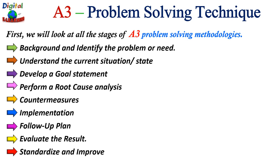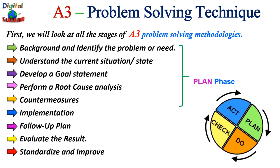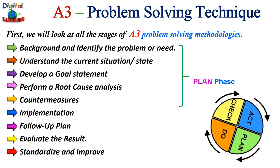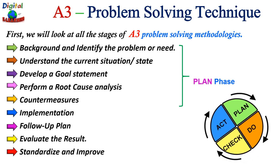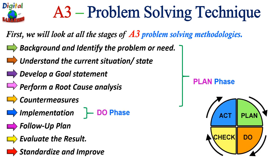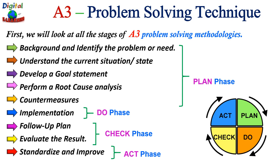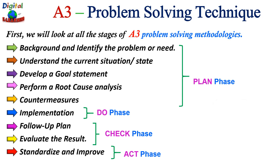Now let us map these steps with the PDCA cycle. The first four to five phases — background through root cause and countermeasures — fall under the Plan phase. Implementation is the Do phase. Follow-up and evaluation come under Check, and standardization is the Act phase. This is how A3 problem solving steps map to PDCA.